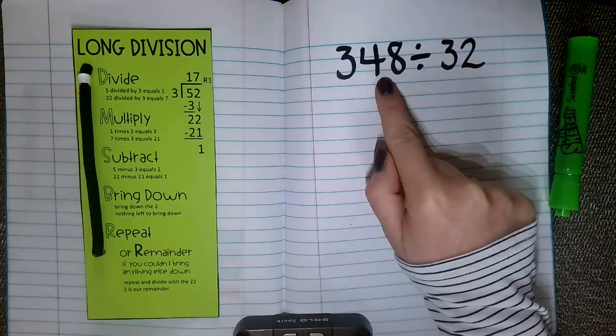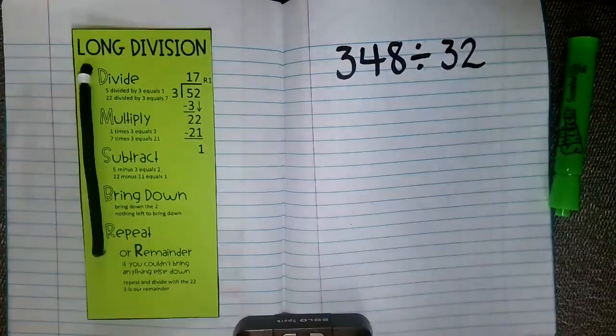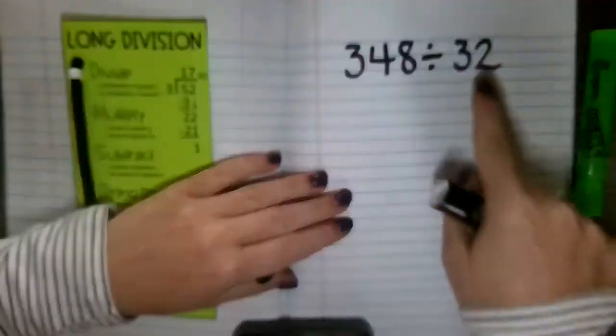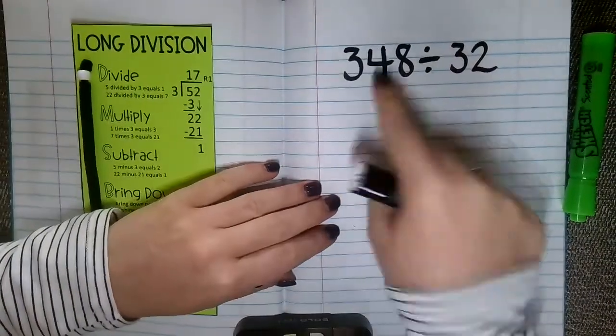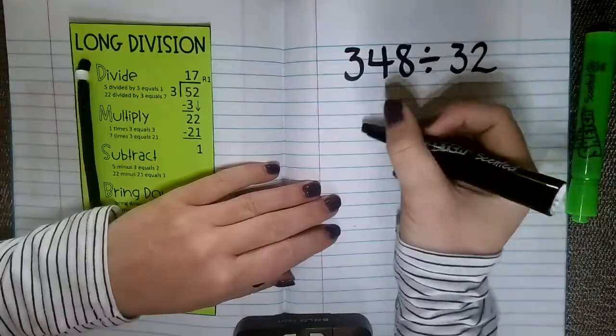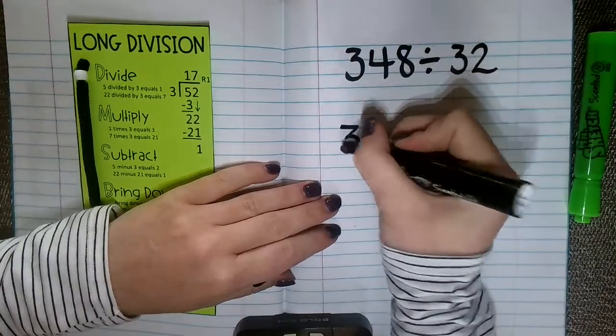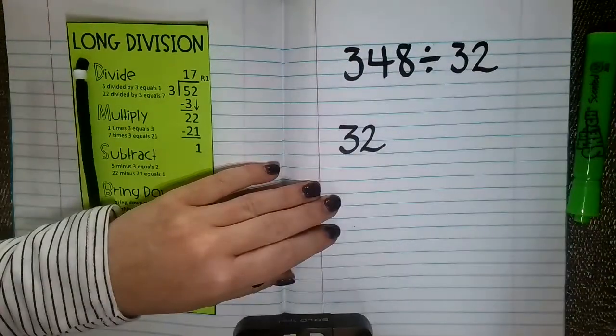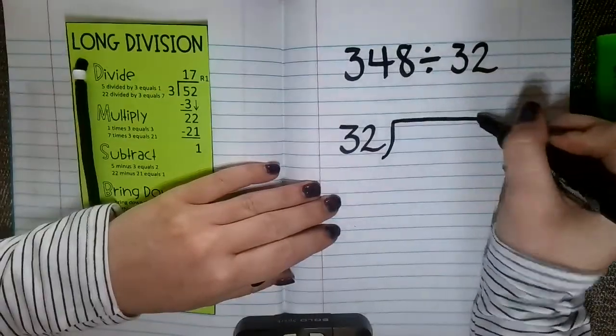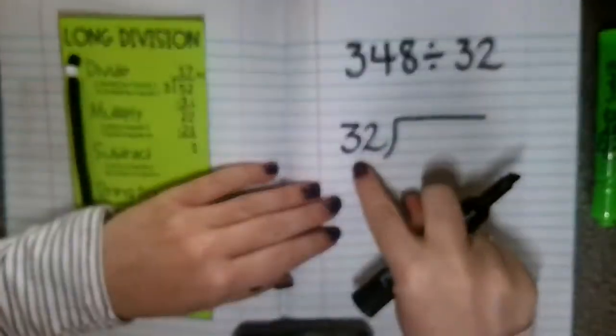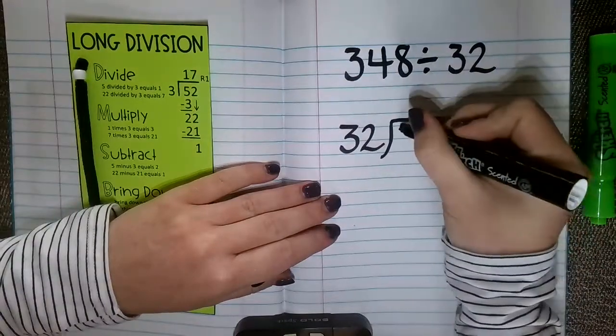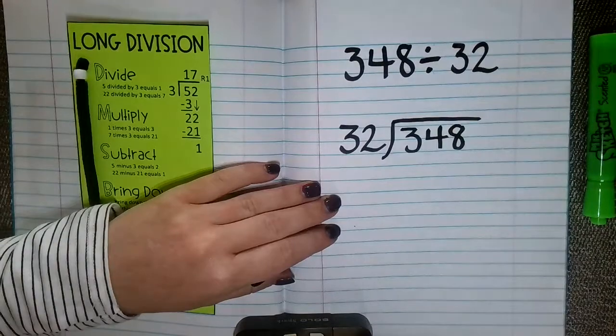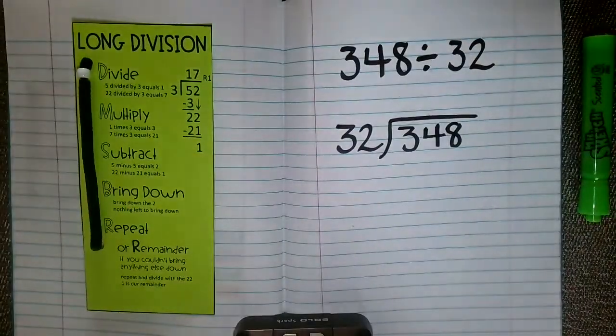So when we're doing that, the number that we are trying to fit into another number, so the number we are trying to see how many times goes into the larger number, is going to be called our divisor. And our divisor goes on the outside of our long division bar. So then the number that we are fitting the divisor into is called our dividend. So 348 is our dividend and 32 is our divisor.